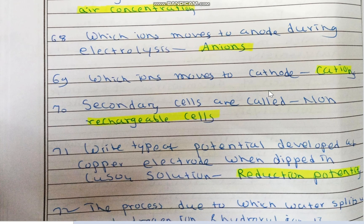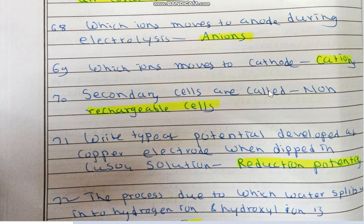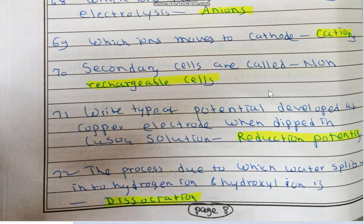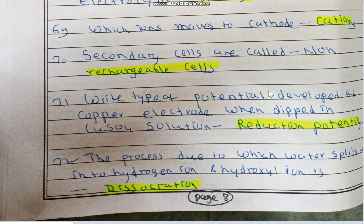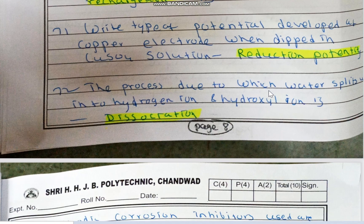Secondary cells are rechargeable cells — not non-rechargeable. The type of potential that develops at a copper electrode when dipped in copper sulfate solution is the reduction potential.